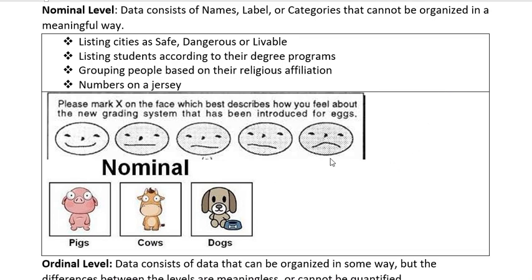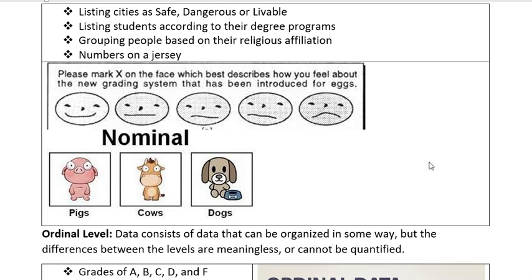You might see something where you have to circle a smiley face or choose which animal you like the most. Those would all be nominal levels.